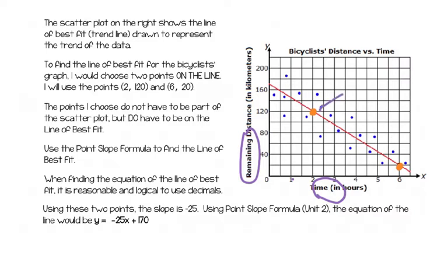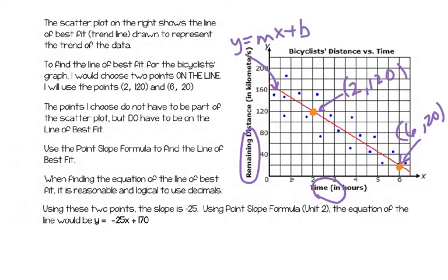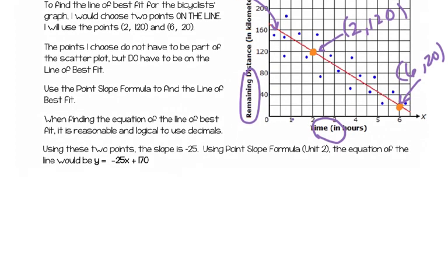If we look at these ordered pairs: that one is (2, 120) and this one is (6, 20). Those are two ordered pairs I can use. We warmed up with point-slope formula, and we can use that to find the equation of that line — y equals mx plus b. So I'm going to start with finding my slope using point-slope formula to find the line of best fit.